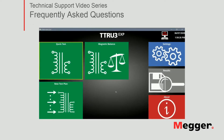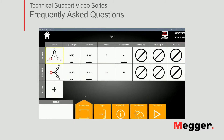Once in the home screen of the TTRU3 software, we're going to go ahead and click New Test Plan. The first screen we get is Nameplate Information. All the orange icons at the bottom — nameplate tabs, asset condition, and test setup — are indicating the flow that will follow until we are ready to start measuring when we reach the last screen.